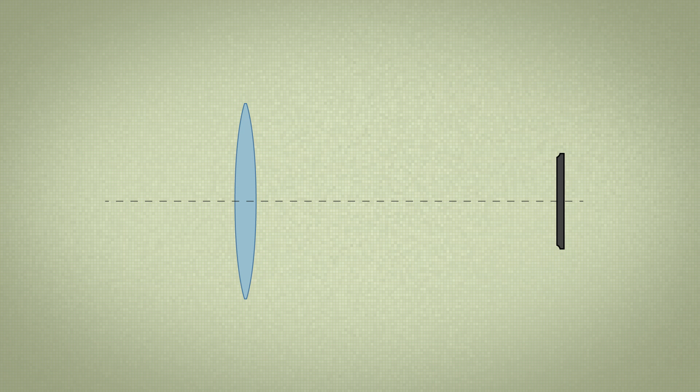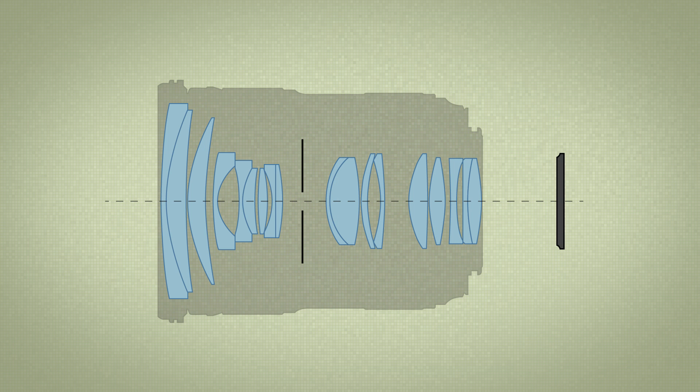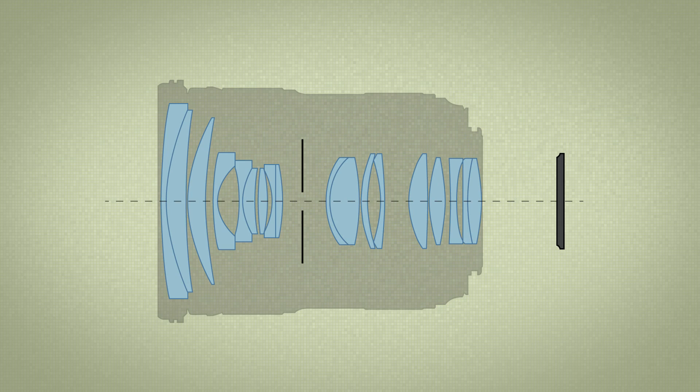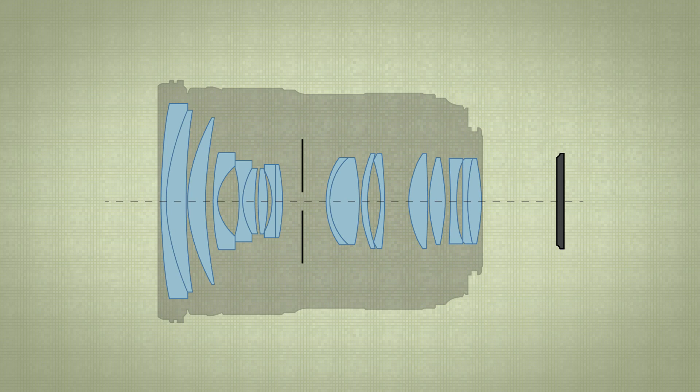But photographic lenses of today don't look as simple as this. They look more like this. This complexity allows for, for example, adjusting the focus and also produces sharper images with less unwanted artifacts. Especially zoom lenses are very complex and consist of many different movable lens groups or lens elements.